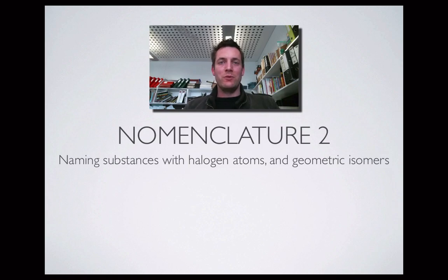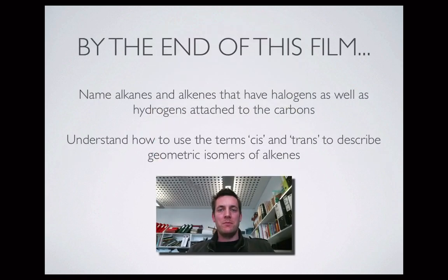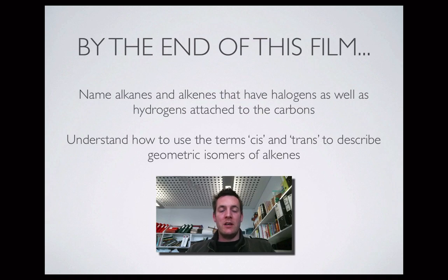Hello and welcome to Nomenclature 2, which follows on from Nomenclature 1. This one is about naming substances that have halogen atoms in them, in particular organic substances and geometric isomers. By the end of this film you'll be able to name alkanes and alkenes that have halogens — chlorine, bromine, iodine, fluorine — attached to the carbon atoms, and understand what we mean by cis and trans when talking about geometric isomers.